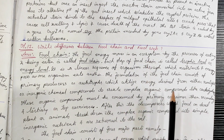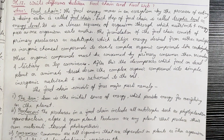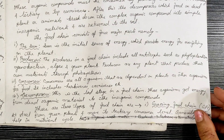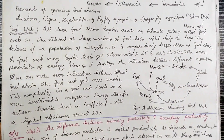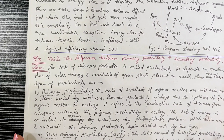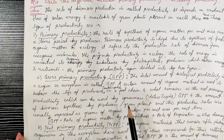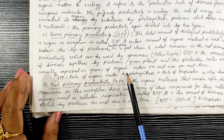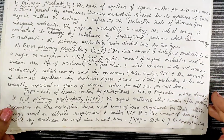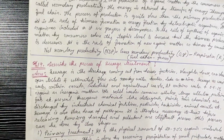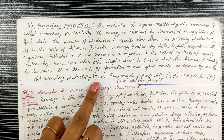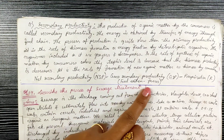Write the difference between food chain and food web. Next: the difference between primary productivity and secondary productivity. Primary productivity includes gross primary productivity (GPP) and net primary productivity (NPP). Secondary productivity includes gross secondary productivity (GSP) and net secondary productivity (NSP), where GSP minus respiration gives NSP.